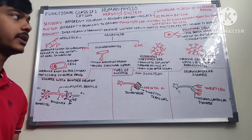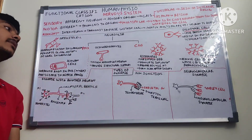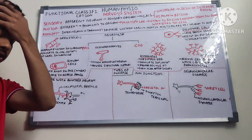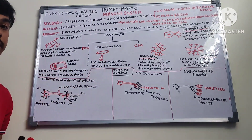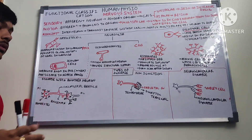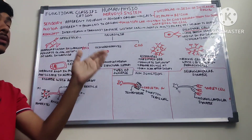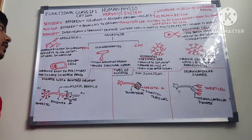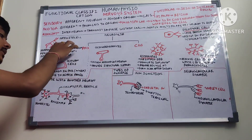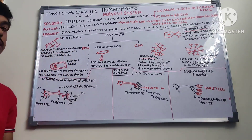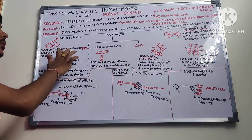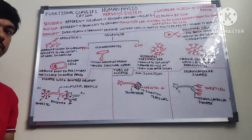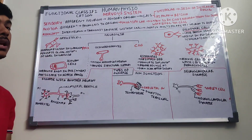Now coming to a bit of histology — what is present in the PNS and CNS. Neuroglia: our nervous system consists of neurons and neuroglia. Neurons are the functional unit, whereas neuroglia is responsible for repair and protection of neurons. In the peripheral nervous system, there are two types of neuroglia: satellite cells and Schwann cells.